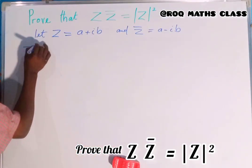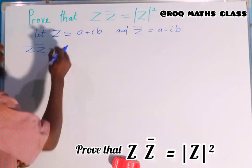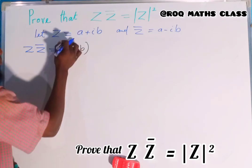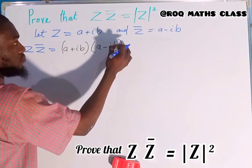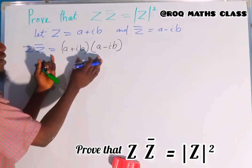Then we have Z multiplied by Z bar. We write it as a plus ib multiplied by a minus ib. This is what we have. Then we have to expand the bracket.